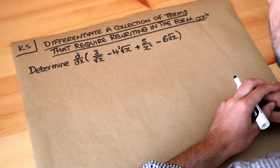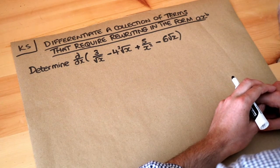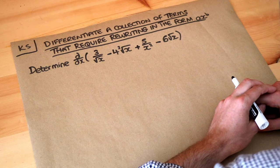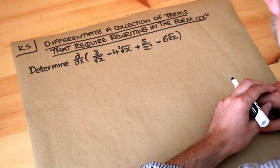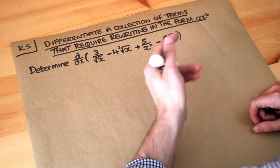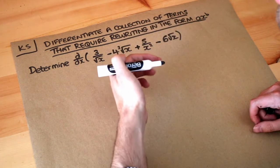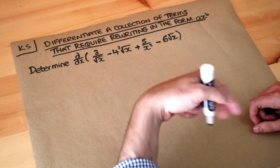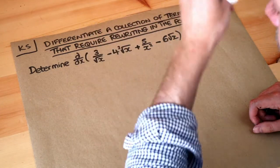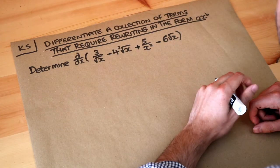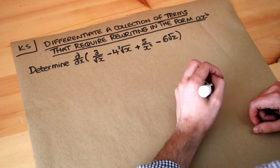Hello and welcome to this Dr. Ross key skill video on differentiating a collection of terms that require rewriting in the form AX to the B. We've explored in previous videos what differentiation means — it just means to find the gradient function, which allows us to find the gradient of a curve or the gradient of the tangent of a curve at a specific point. Do view that video first if you don't understand what is meant by that.